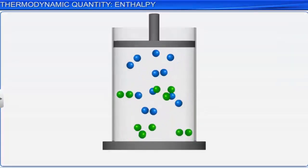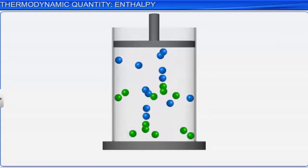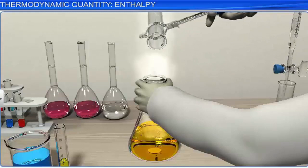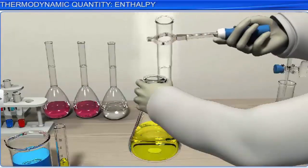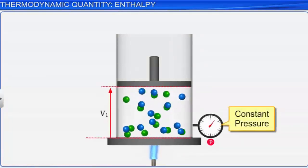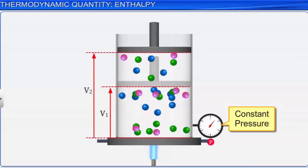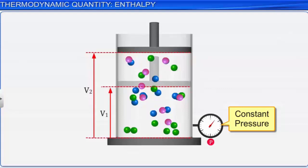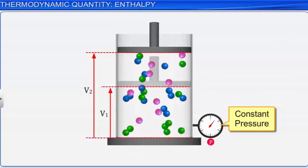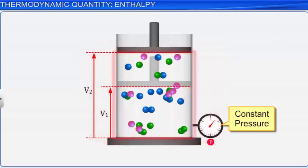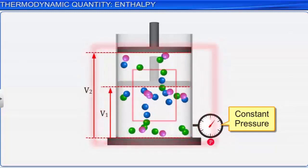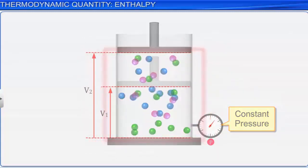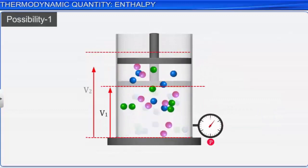If a process is carried out at constant volume, then the heat content is the same as the internal energy, as no work is done. But most chemical reactions are carried out at constant pressure, not at constant volume. When a reaction is performed under constant pressure, it may involve a change in volume. The energy change in such reactions may not only involve change in internal energy but also do some work. Assume a chemical reaction occurring at constant pressure that is exothermic and involves gaseous substances.